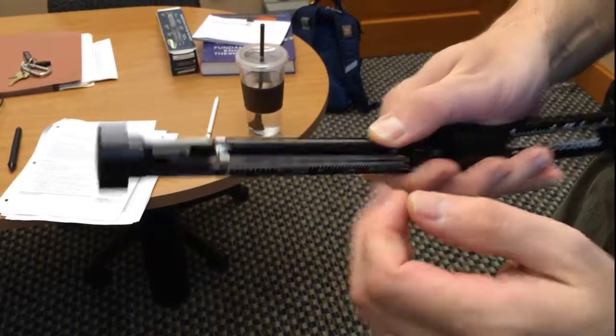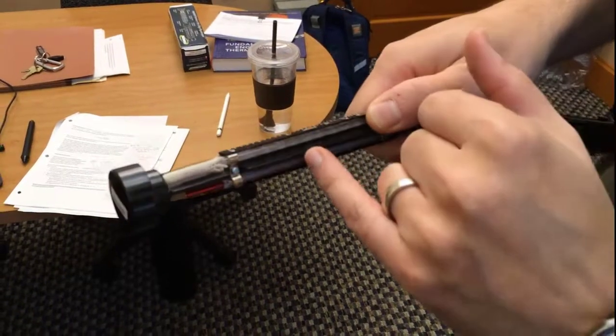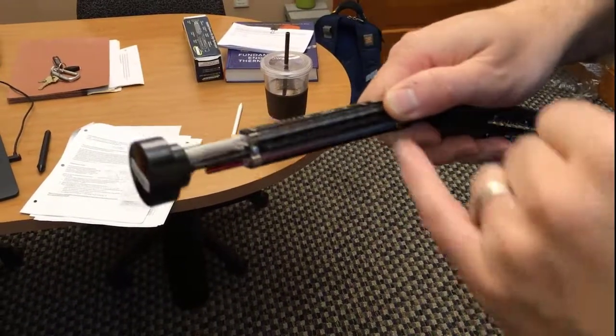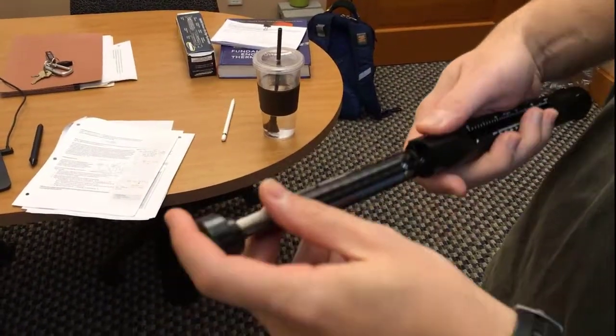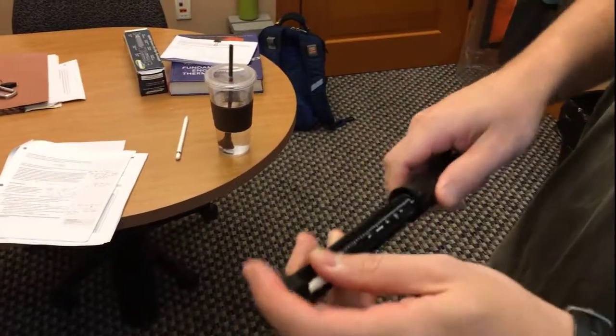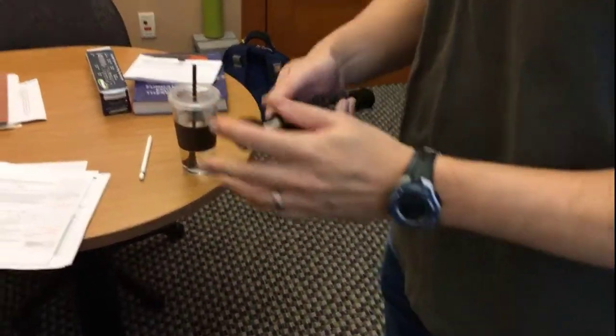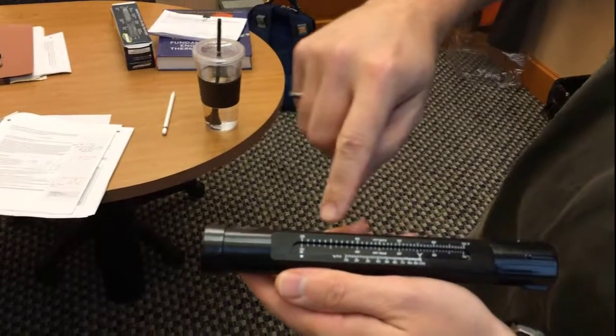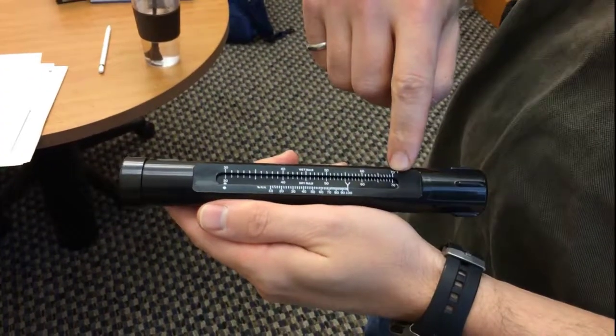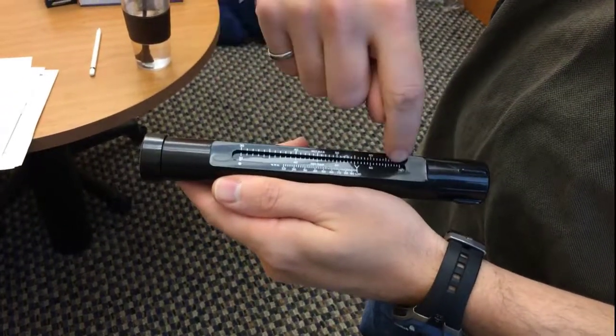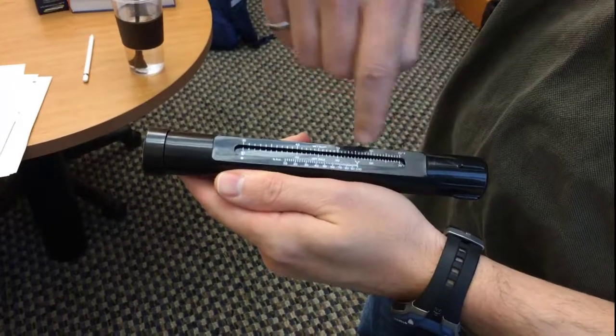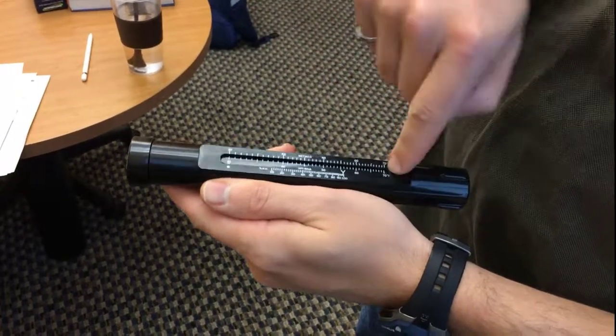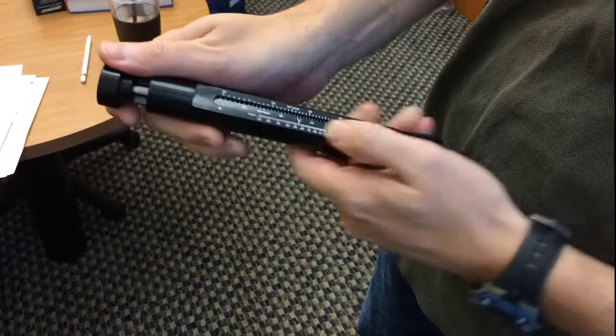We got 70 on the dry bulb and 58 on the wet bulb. So what we do now is close it and look at these scales. The dry bulb was 70 and the wet bulb was 58. We're going to line up the 70 with the 58. We get the 70 on the dry bulb.